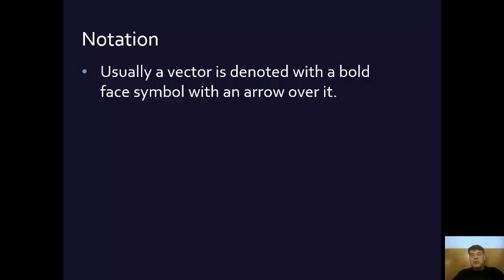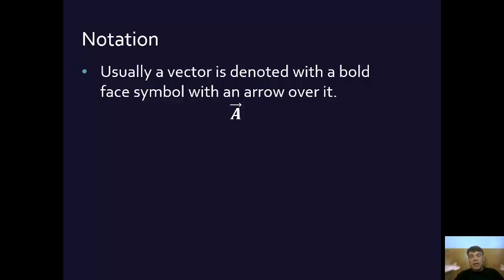What notation do you use for vectors? Usually a vector is denoted with a bold-faced symbol with an arrow over it — for example, this would be vector A. Planes have vectors because they fly in a certain direction, in three dimensions: an X, a Y, and a Z component. So a vector is a magnitude in a certain direction, and we denote that with a symbol — it doesn't have to be a capital letter — with an arrow over the top of it.